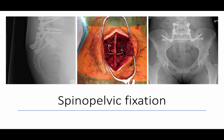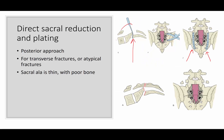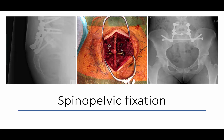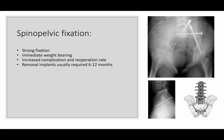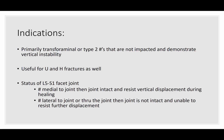Then there's spinopelvic fixation. This can be done through a midline approach with sacral nerve root decompression. It's a bypass technique — you go from L4-L5 into the ilium, and it can be combined with bilateral iliosacral screws. This provides strong fixation and allows for immediate weight bearing. Unfortunately, there is an increased complication and re-operation rate, and implants often have to be removed. Indications include transpedicular or type 2 fractures that are vertically unstable, and U- and H-shaped sacral fractures.